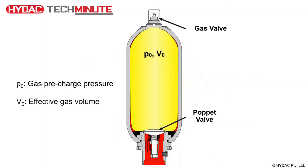Nitrogen gas is used to fill the bladder to a specified pressure through the gas valve at the top of the accumulator. This is known as the gas pre-charge pressure, or P0. The volume of gas within the accumulator is known as the effective gas volume, or V0. Note that in this configuration the bladder is holding closed the poppet on the fluid port assembly, and there is no hydraulic fluid within the accumulator.